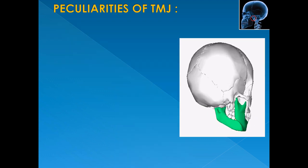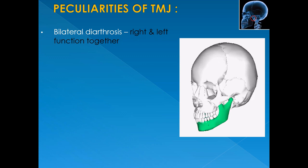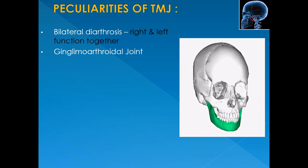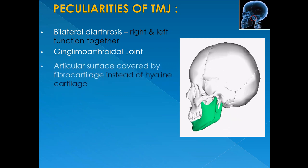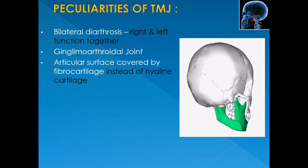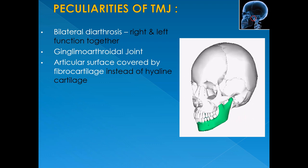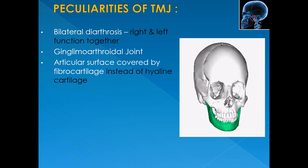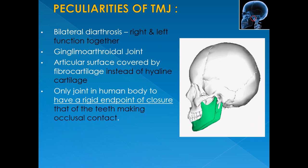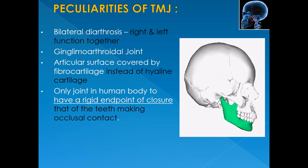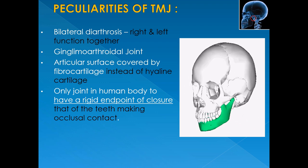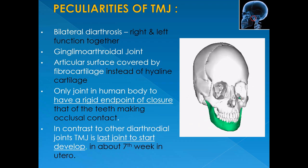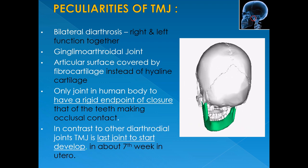TMJ is also called a ginglymoarthrodial joint — from 'ginglymus' meaning a hinged joint allowing motion only backward and forward in one plane, and 'arthrodia' meaning a joint permitting gliding motion. The TMJ consists of two compartments separated by an articular disc: the upper compartment allows gliding or sliding movement, while the lower compartment allows hinged movement. Its articular surfaces are covered by fibrocartilage instead of hyaline cartilage, and it is the only joint in the human body with a rigid end point of closure — that is, the teeth making occlusal contact. TMJ is also the last joint to start developing, at about the 7th week in utero.